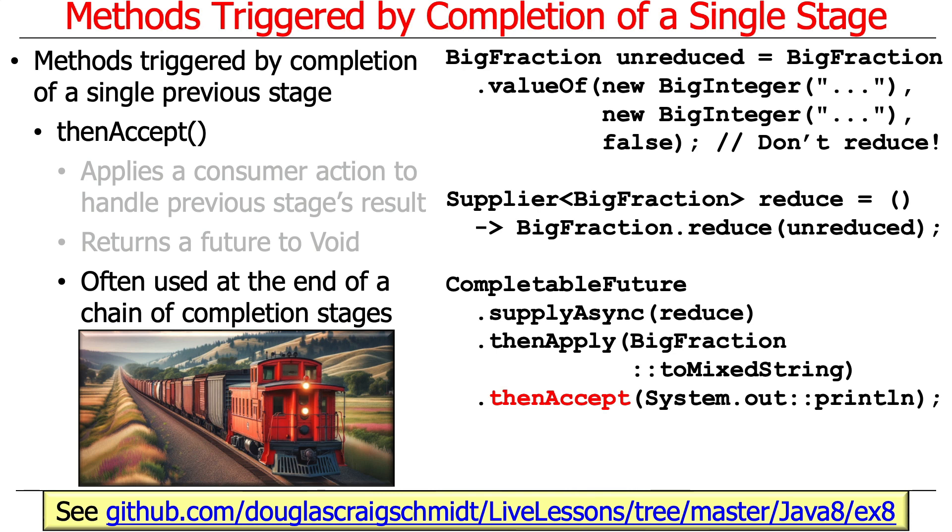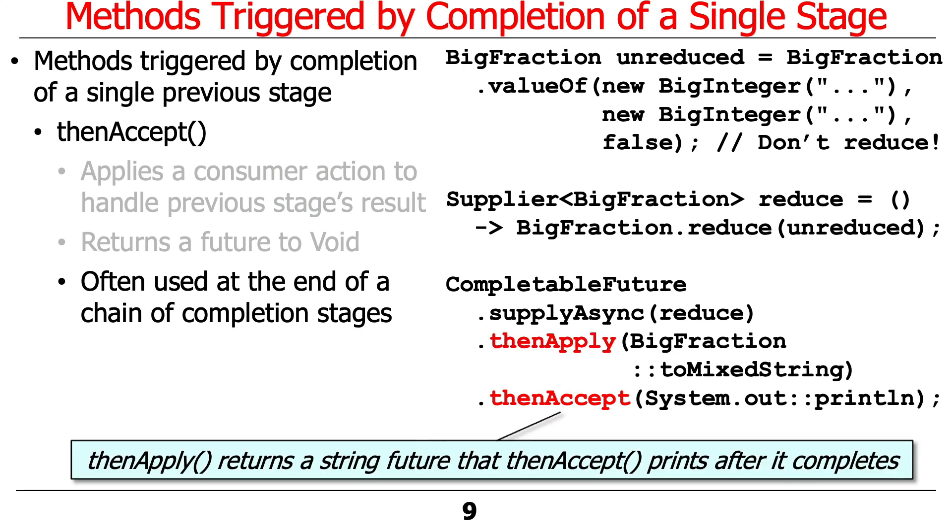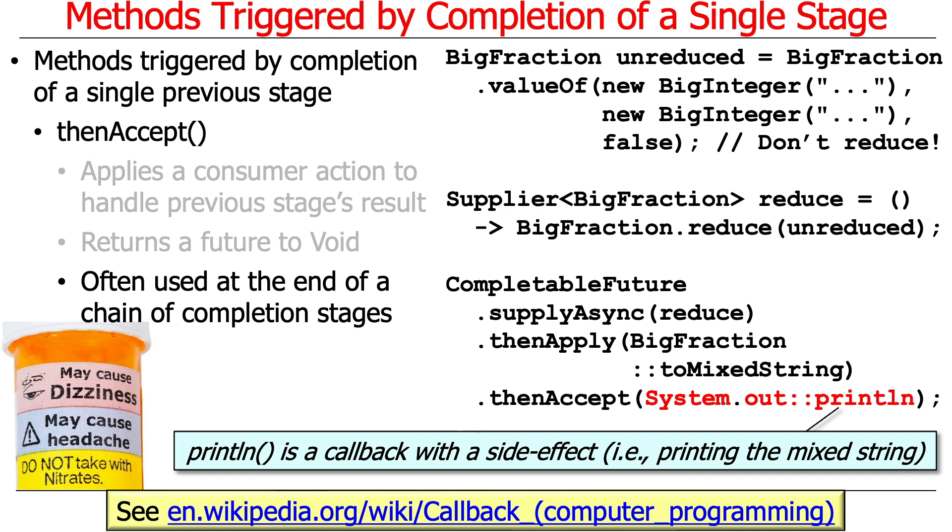All right, so let's take a look at this example. This is just a continuation of what we talked about before. As you can see, we have our unreduced BigFraction, we have our supplier that will reduce it, we run this in the background with supplyAsync. When that's done, we take the reduced but improper BigFraction and turn it into a mixed string. And then the last thing we do at the end of this chain as the caboose, we're going to accept it, and we're going to pass in a method reference to println. So thenAccept will be called when thenApply finishes, it returns a string, and then thenAccept will be called to print the results. Notice that println has a side effect, namely it prints the mixed string to standard output. So that's basically the flow of things.